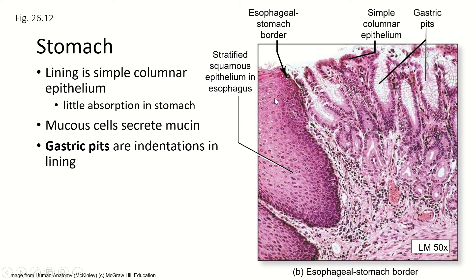What we're looking at here is the border between the esophagus and the stomach. You can see this really clear dividing line between the stratified squamous epithelium of the esophagus and the simple columnar epithelium of the stomach.